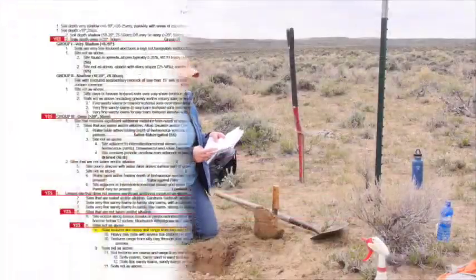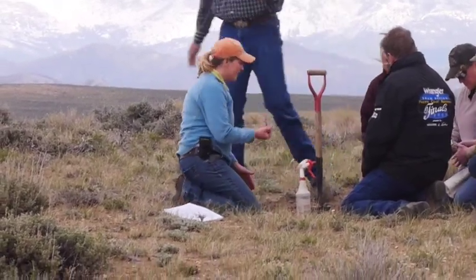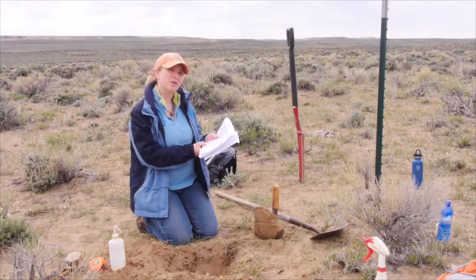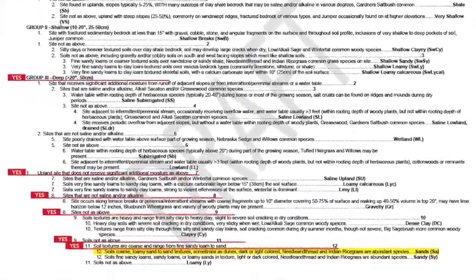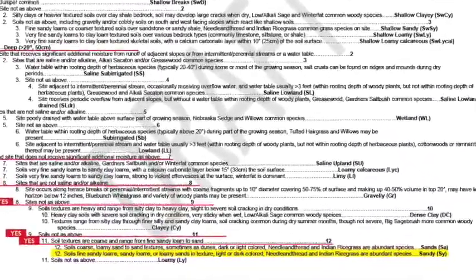Now texture comes into play. The first question in this set asks if textures are heavy — ranging from silty clay to heavy clay with slight to severe soil cracking in dry conditions. Our soil is quite coarse, so the answer is no. We go to 'soils are not as above,' then to the question of whether soil textures are coarse and range from fine sandy loam to sand, or loamy sand to sand, sometimes as dunes, dark or light colored. The next option is fine sandy loams, sandy loams, or loamy sands, light or dark colored.